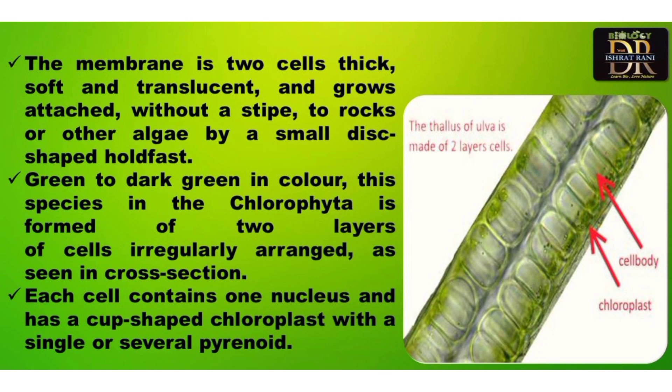The thallus is two cells thick; the cells are translucent and grow attached without a stipe to rocks. It is green in color, and this species belongs to the Chlorophyta. Each cell has a nucleus and a cup-shaped chloroplast with several pyrenoids.